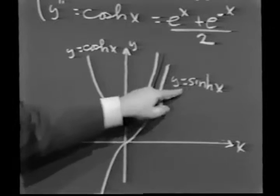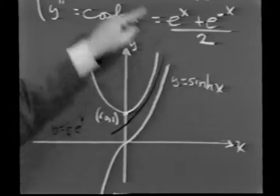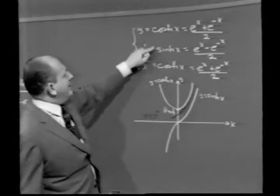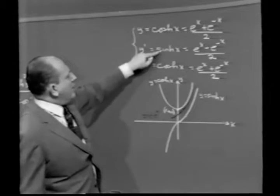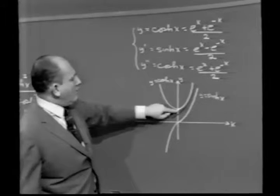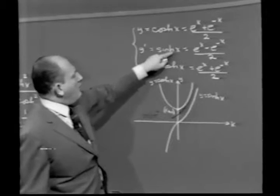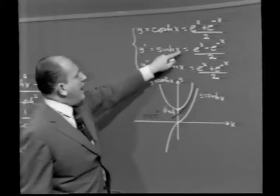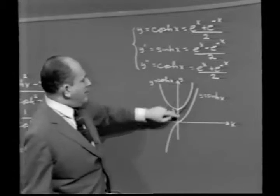On the other hand, how can we plot y equals sinh x? Well, I guess we can come right back to here and work from here. The derivative of sinh is cosh. The cosh is always at least as big as 1, we found out. Therefore, the slope of sinh x is always at least as big as 1, and it's equal to 1 when x is 0.